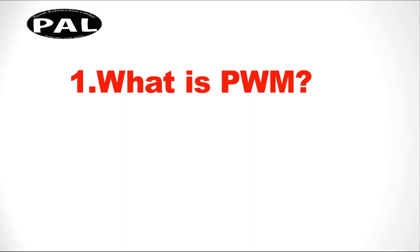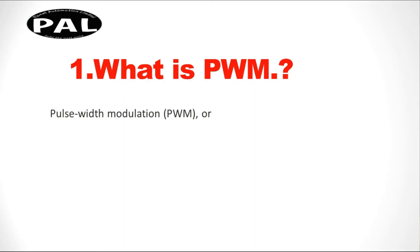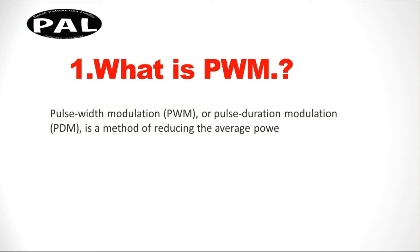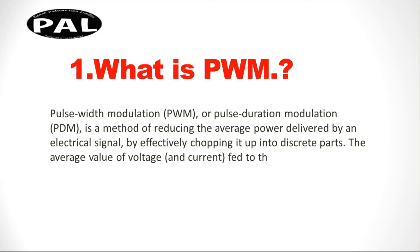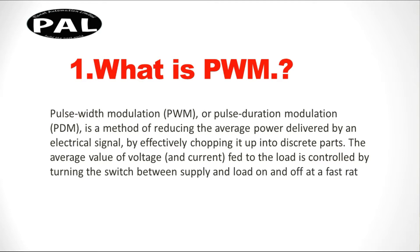So friends, what is PWM? Pulse width modulation, or PWM, also known as pulse duration modulation or PDM, is a method of reducing the average power delivered by an electrical signal by effectively chopping it into discrete parts. The average value of voltage and current to the load is controlled by turning the switch between supply and load on and off.